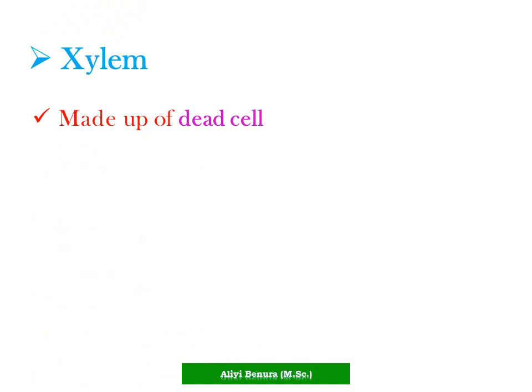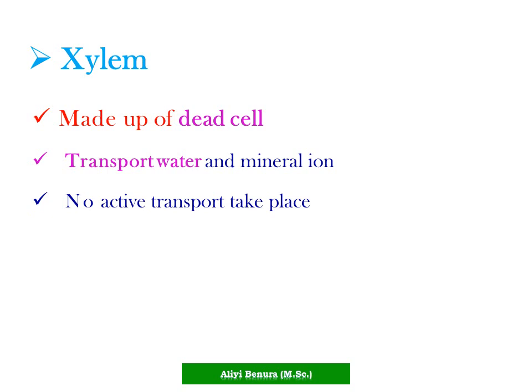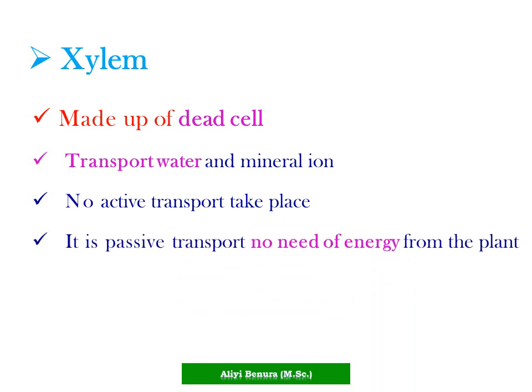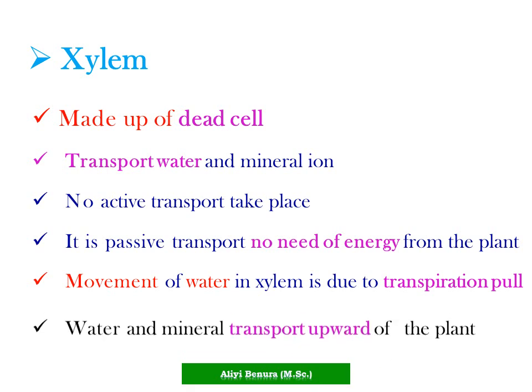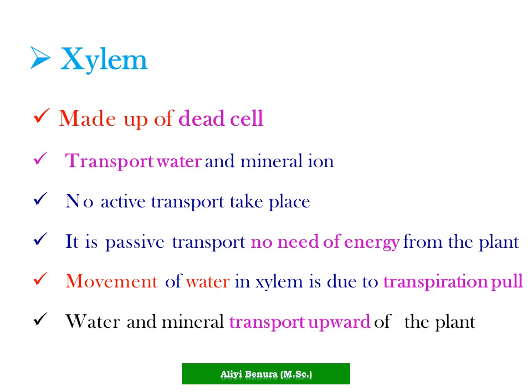Xylem tissue is made up of dead cells or dead tissue. It transports water and mineral ions. No active transport takes place in xylem tissue — it is passive transport, so there is no need for energy from the plant. Movement of water in xylem is due to the transpiration pull. Water and minerals are transported upwards through the plant.